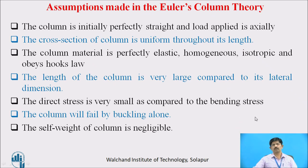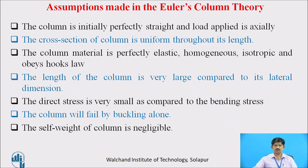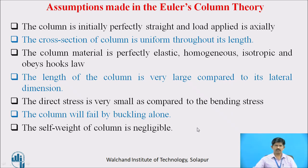The assumptions made in Euler's Column Theory: the column is initially perfectly straight and the load applied is axial. The cross section of the column is uniform throughout its length. The column material is perfectly elastic, homogeneous, isotropic, and obeys Hooke's Law — that is, stress is proportional to strain within the elastic limit. The length of the column is very large compared to its lateral dimension, so length divided by least lateral dimension is greater than 12. The direct stress is small compared to the bending stress and the column will fail by buckling alone. The self-weight of the column is negligible.